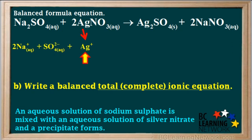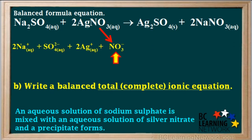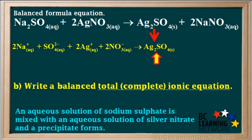The first ion in AgNO3 is Ag+, and the 2 in front of the formula tells us there are two Ag+ ions present. Since the AgNO3 is aqueous, so is the Ag+ ion. The other ion in silver nitrate is the nitrate ion, NO3-. The coefficient 2 in front of the AgNO3 means there are also two NO3- ions. In a total ionic equation, we don't change the formula for the solid precipitate at all. We simply write its formula without any charges and include the subscript S for solid. We do not break it up into individual ions like we do for the aqueous compounds.